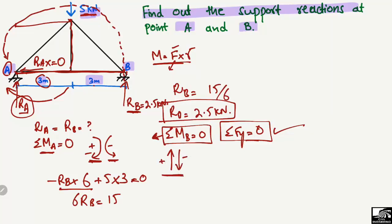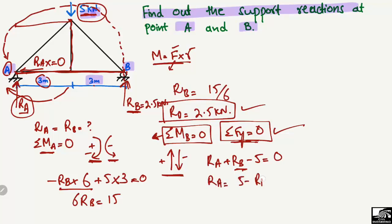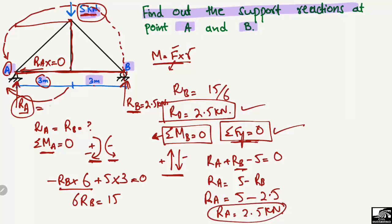RA and RB act upward (positive) while the 5 kN load acts downward (negative). Setting the summation of vertical forces equal to zero: RA + RB − 5 = 0. Since RB = 2.5 kN, we get RA = 5 − 2.5 = 2.5 kN. So the support reaction at point A is also 2.5 kN.